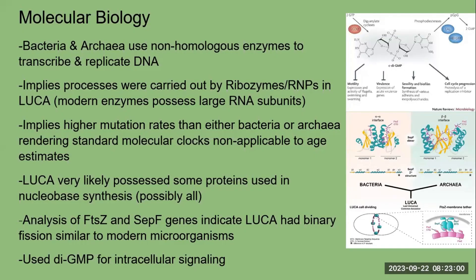Let's first take a look at the molecular biology of LUCA. Bacteria and archaea use non-homologous enzymes to transcribe and replicate DNA. This means that not only would translation be carried out by catalytic RNA, but replication and transcription would be as well. This would also mean that DNA would mutate at greater rates than in either bacteria or archaea, implying that using the standard molecular clock methods — where you assume that the rate of mutation would be between that of archaea and bacteria — will give you an age estimate much older than LUCA actually was.